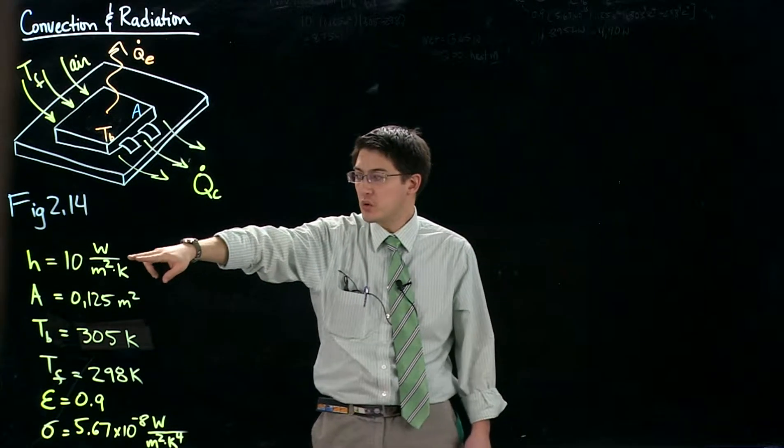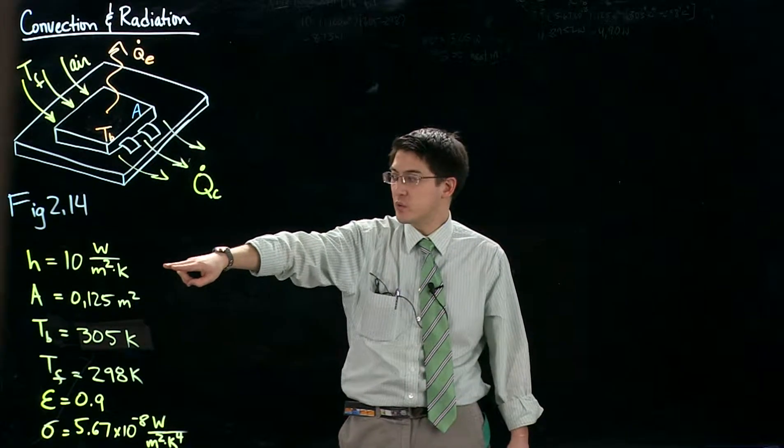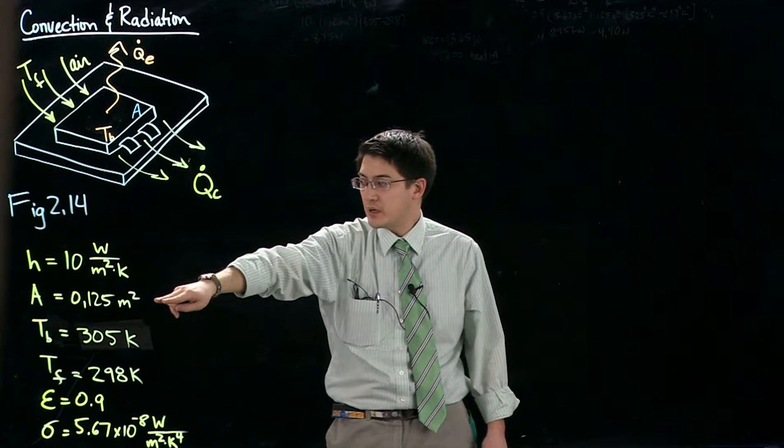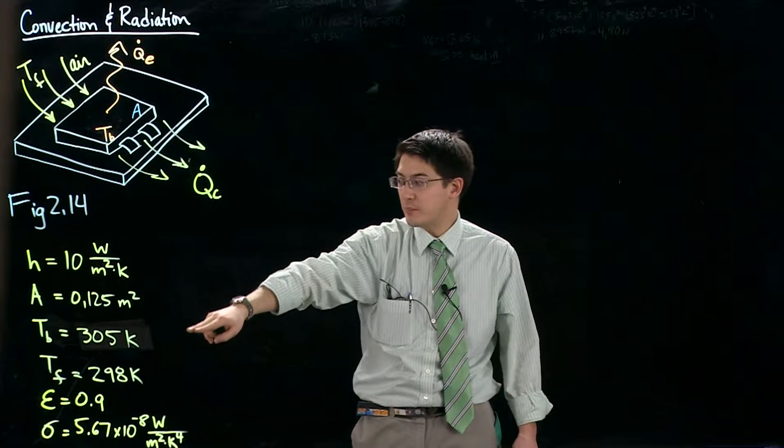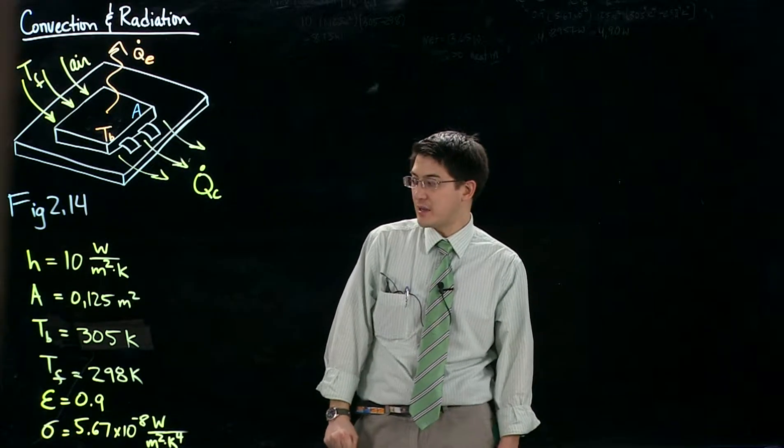We have a flow coefficient here, h equals 10 watts per square meter kelvin. Surface area of the chip is 0.125 square meter. The temperature of the surface of the chip is 305 kelvin.